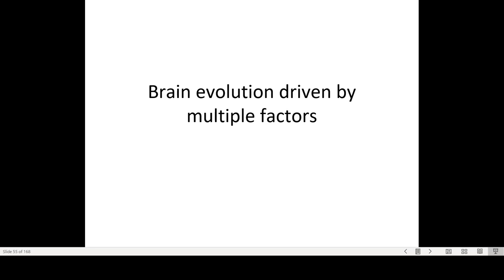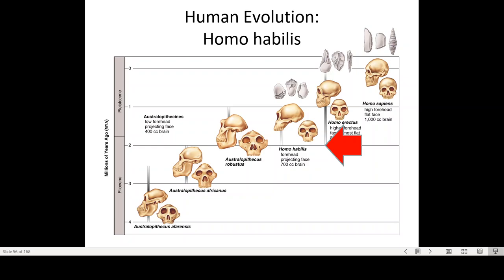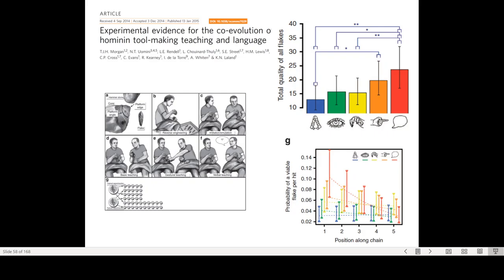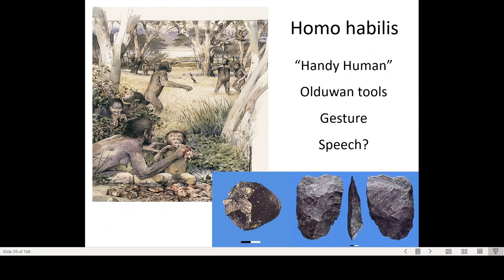We just saw that a number of different factors lead to the evolution of larger brains. Now coming back to our human ancestors around two million years ago, we have the first true human, scientifically called Homo habilis. Homo habilis had a slightly larger brain and most likely had the ability to speak already.